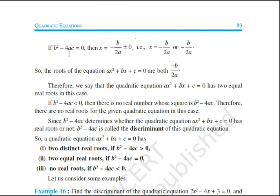If b² - 4ac, this is known as the discriminant. If you solve and get 0, then x value, the roots, will be -b/2a plus or minus 0, that is -b/2a or -b/2a. Since both are 0, the two roots will be equal. Therefore, we say that the quadratic equation has two equal real roots in this case.